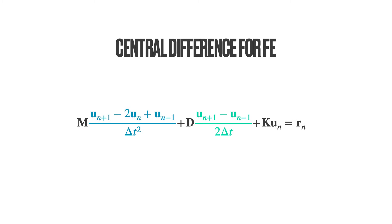We can now simplify this expression, that is, keep the term UN plus 1 on the left and take everyone else to the right. We do this because we know the displacements at N and N minus 1 and we would like to compute the unknown term UN plus 1.